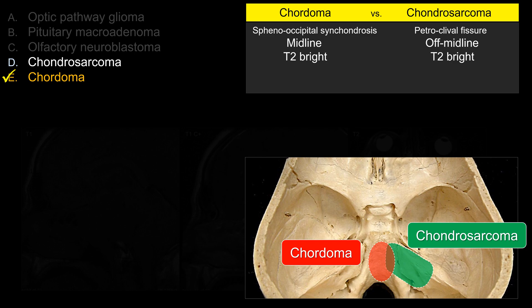Both chordoma and chondrosarcoma are relatively T2-bright, so that does not help you distinguish between them — but it may help distinguish these two entities from other lesions. It is said that chordoma tends to have lower ADC compared to chondrosarcoma, but in reality, unless you can compare them side by side, it's sometimes difficult to use that information to make the differentiation.